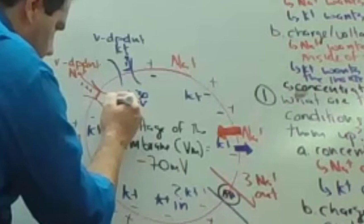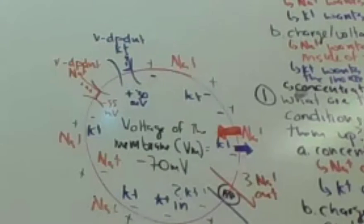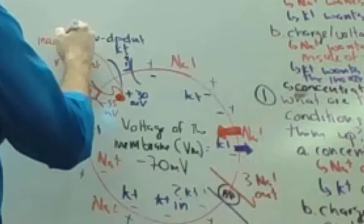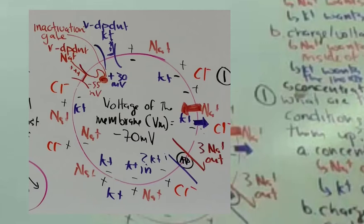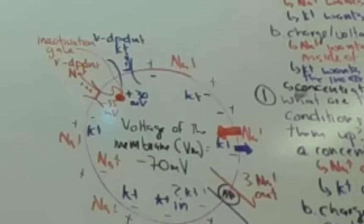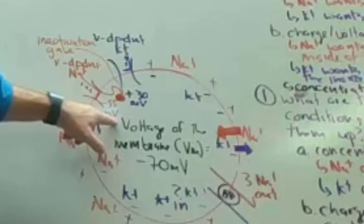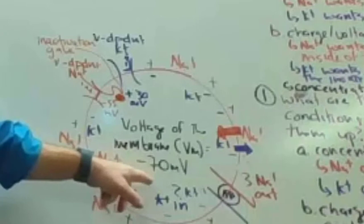The voltage-dependent sodium channel has a plug called an inactivation gate that swings in and closes the channel. So voltage-dependent channels respond to the voltage of the membrane — sometimes it's a huge shift to plus 30 where the gate slides out and the channels open for potassium. Sometimes it's a small shift to negative 55 where the positive charges are less attracted and the sodium channel opens.